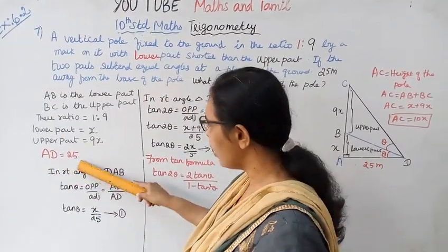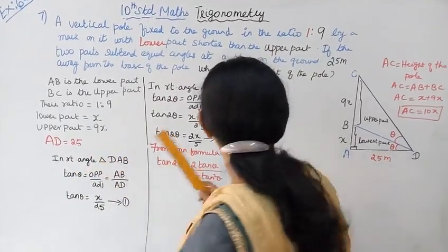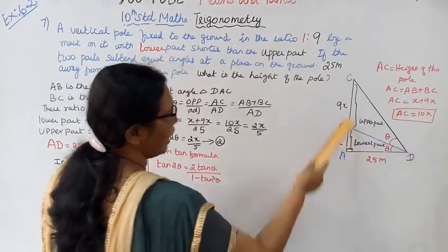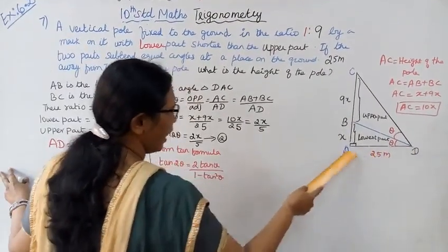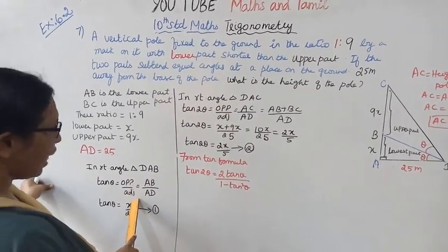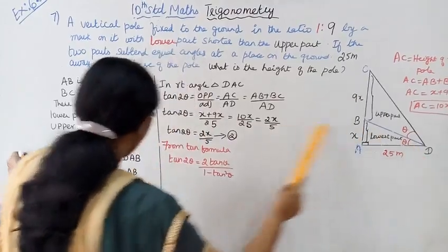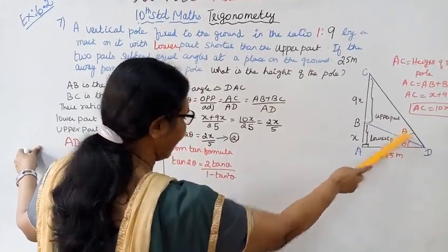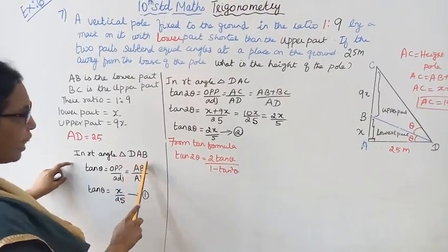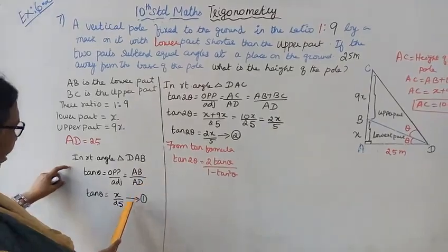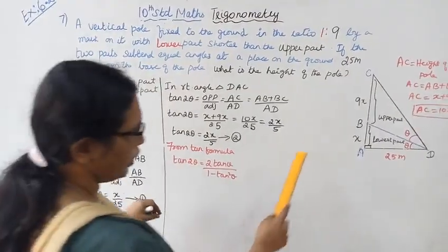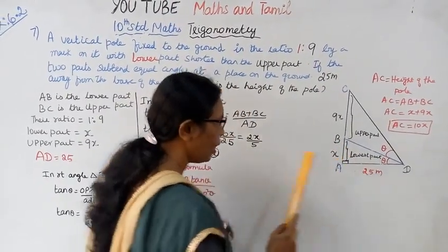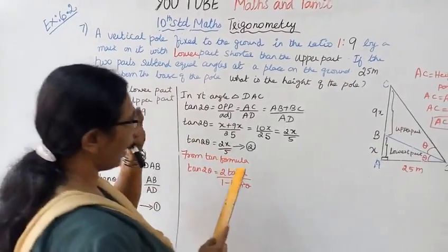Distance between the pole and the ground level is 25 meters. In right angle triangle DAB, tan theta equals opposite by adjacent, which is AB by AD. AB equals x and AD equals 25. So tan theta equals x by 25. This is the first equation.